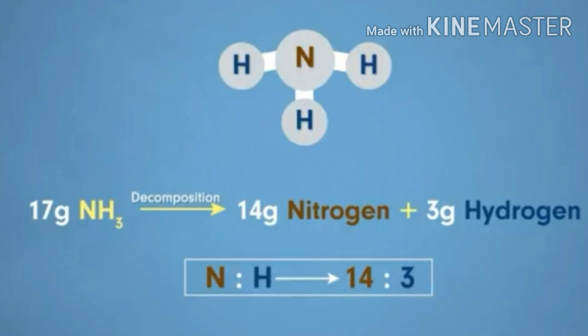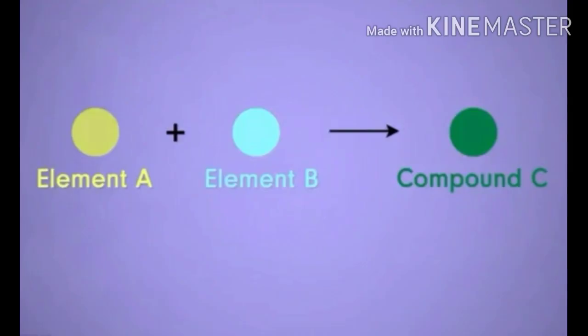For example, ammonia is 17 grams, nitrogen is 14 grams, and hydrogen is 3 grams. We see that nitrogen is proportional to hydrogen, that is 14 ratio 3. To understand it in a better way, we will take the first example we took where element A reacted with element B to form compound C.